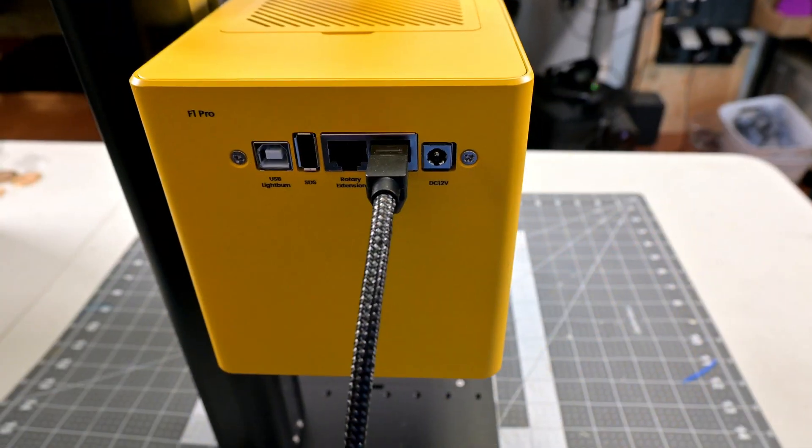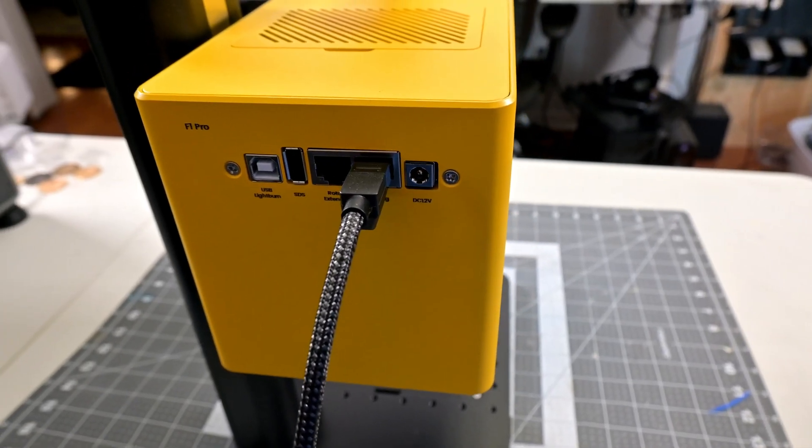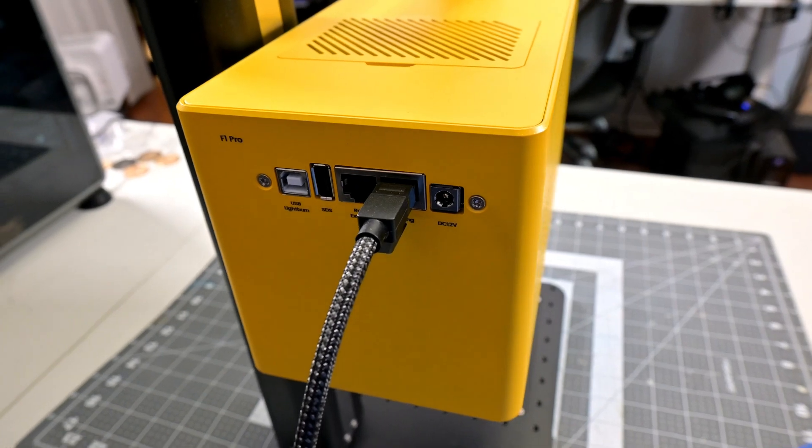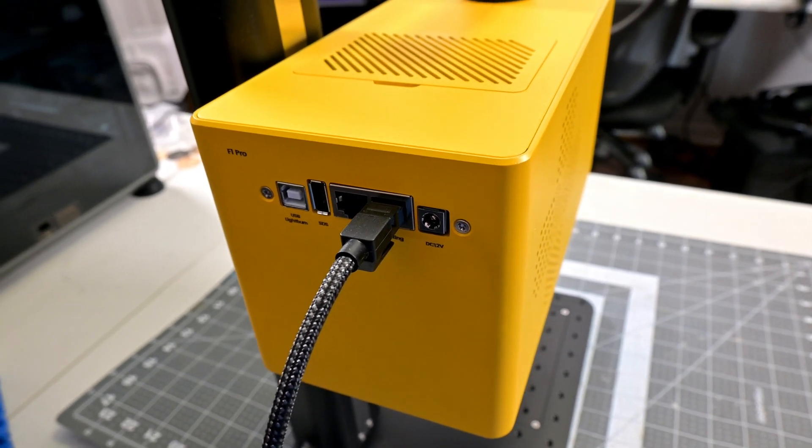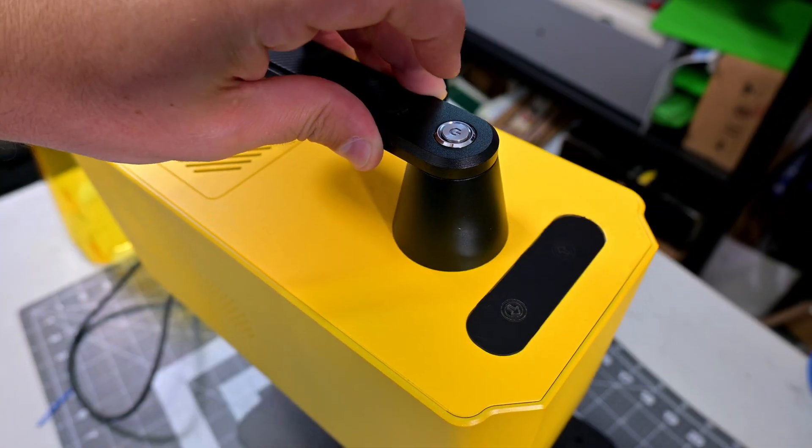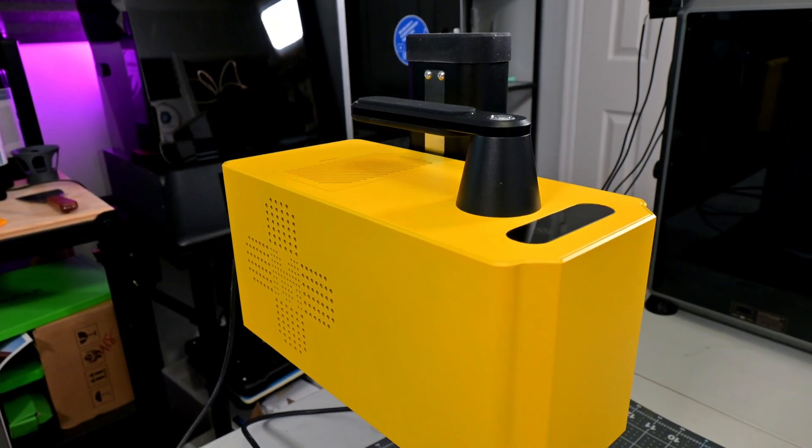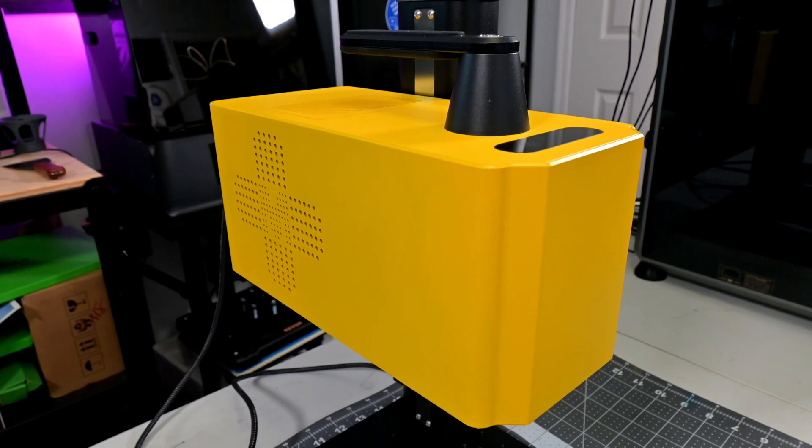Around the back, we see the USB Type B port for connecting to your computer, a USB port labeled SDS, which I assume is for diagnostics, and then a couple of RJ45 ports for the optional rotary attachment and to power the lifting stand. And finally, the main power input. Unfortunately, there is no foot pedal or start job button, so you'll need to start the job from your computer. That can be limiting when using it in handheld mode.